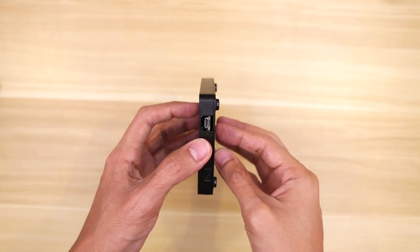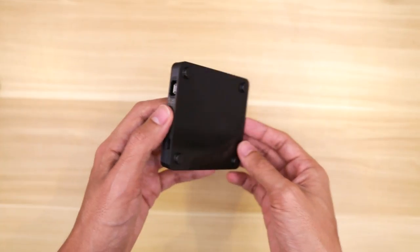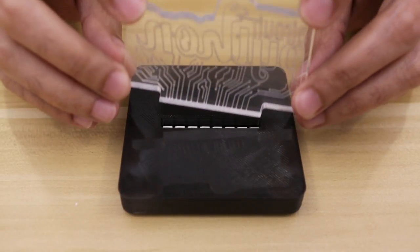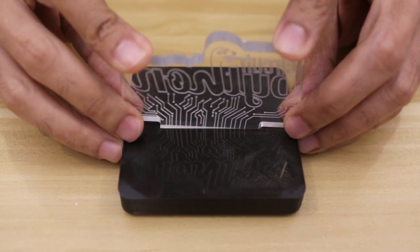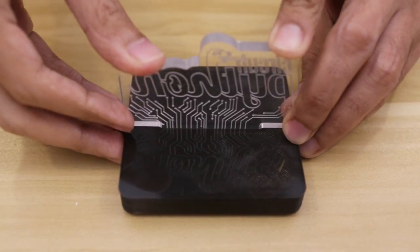I also added four little rubber feet to the bottom just to give it a little bit more grip. And that's pretty much it for the assembly. All that's left to do is to install the acrylic sign and that just clicks into place.